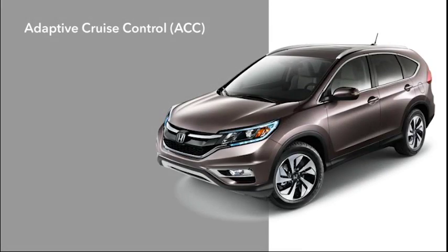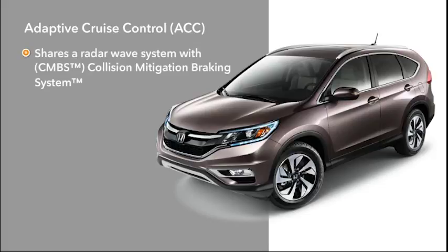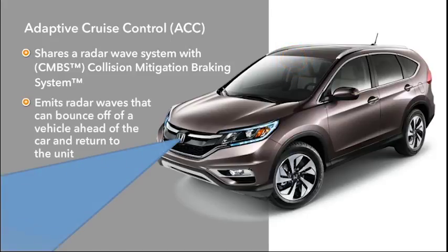ACC uses a radar unit mounted behind the grill, as well as a camera located between the windshield and the rearview mirror. It emits radar waves that can bounce off a vehicle ahead of the car and return to the unit, allowing the system to gauge the distance of the vehicle. The system then sets the appropriate throttle position and can even apply light braking to maintain a preferred following interval.